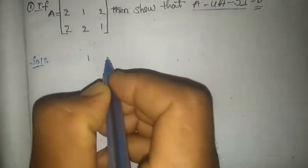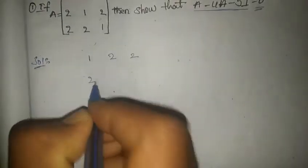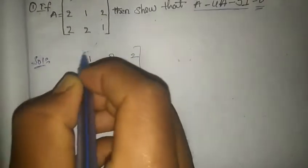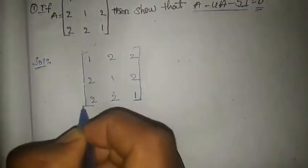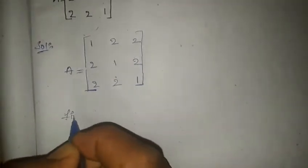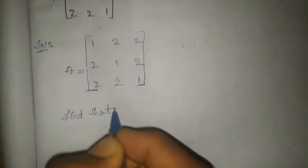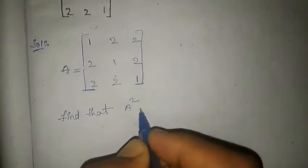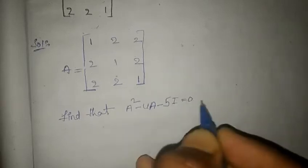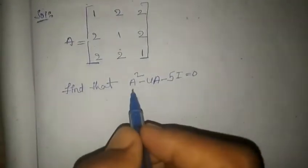So the given A value is [[1,2,2],[2,1,2],[2,2,1]]. We have to find that A² - 4A - 5I = 0. To do that, first we have to find A².